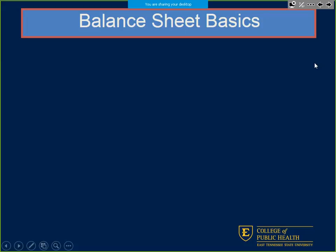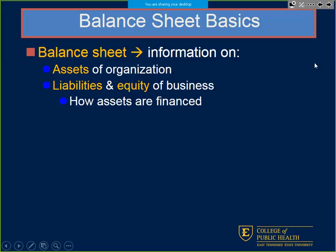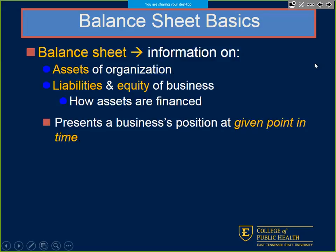The best way to remember: assets minus liability equals equity. Balance sheets give you the assets of the organization — cash, capital, equipment — and liabilities and equity showing how we're financing those assets. That's why everything has to balance. And that's why it's called a balance sheet.